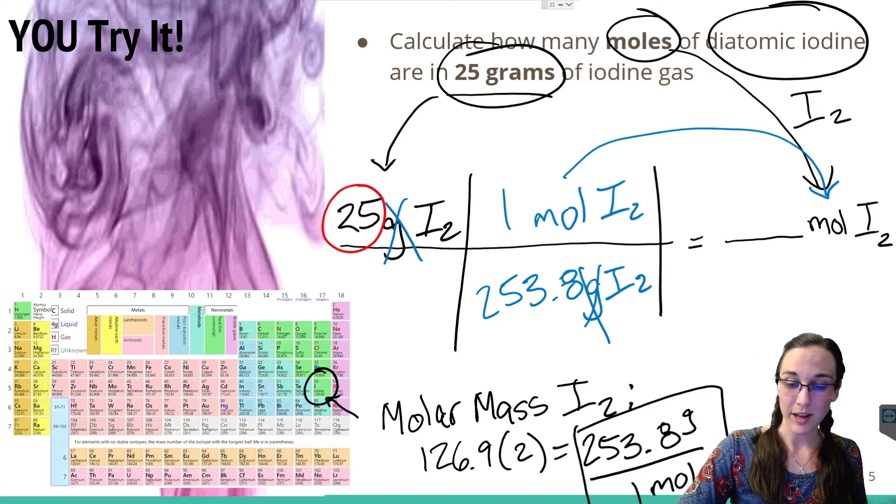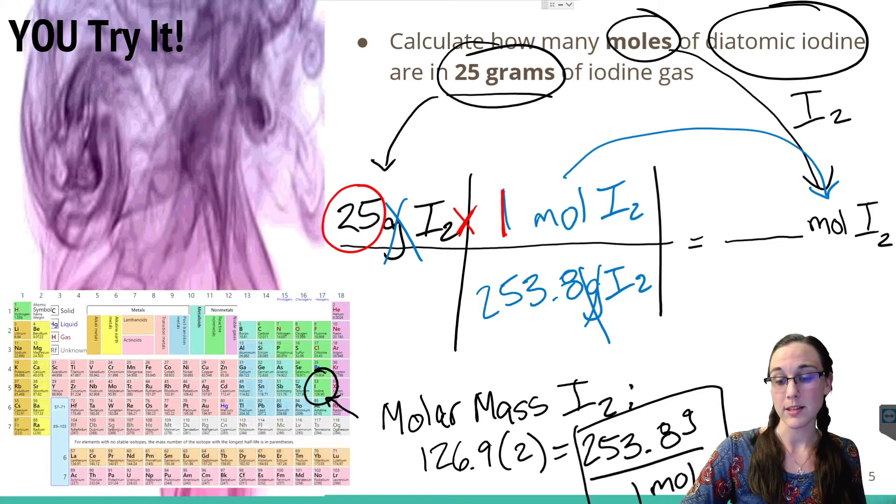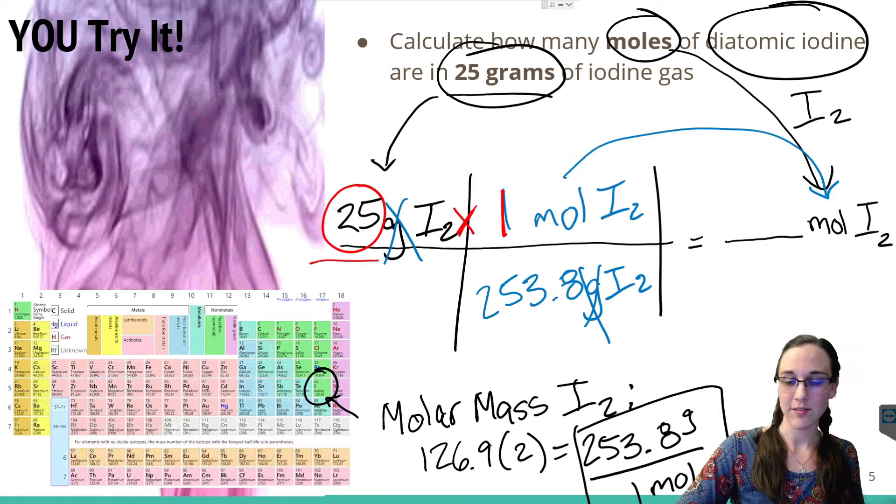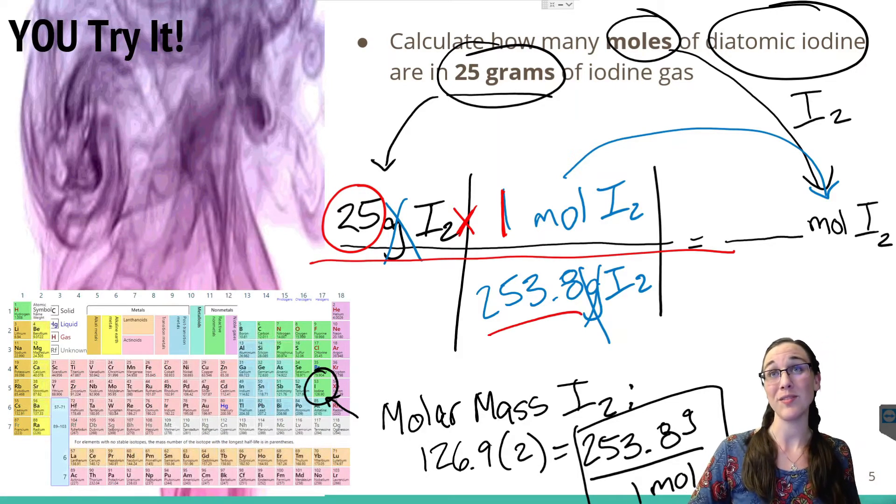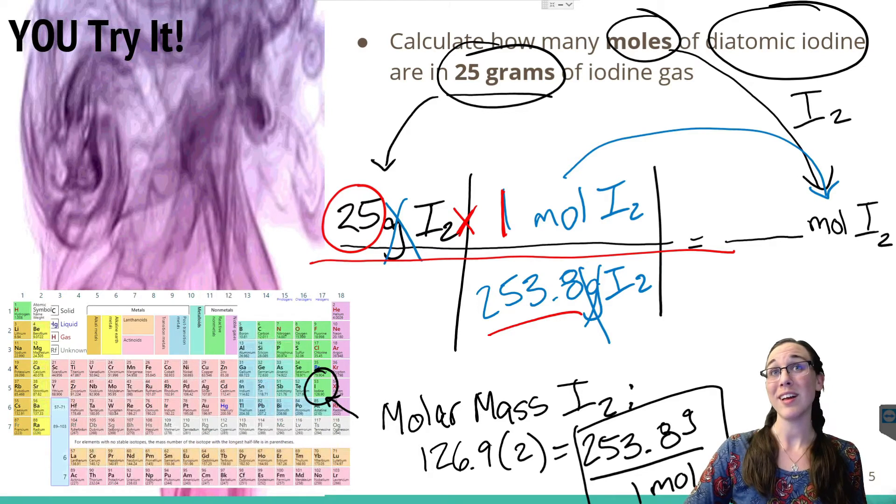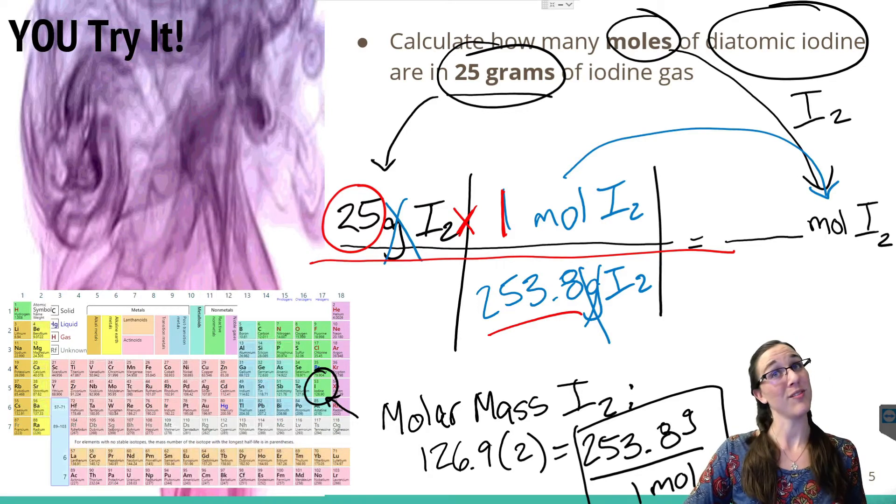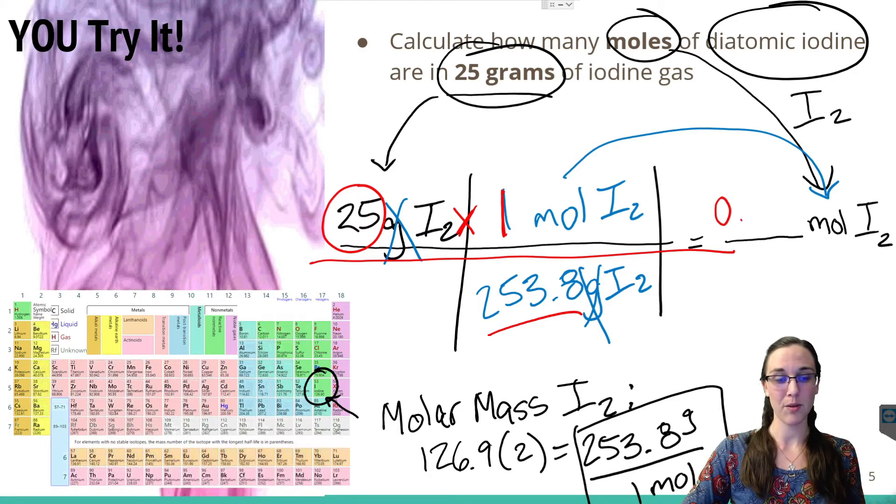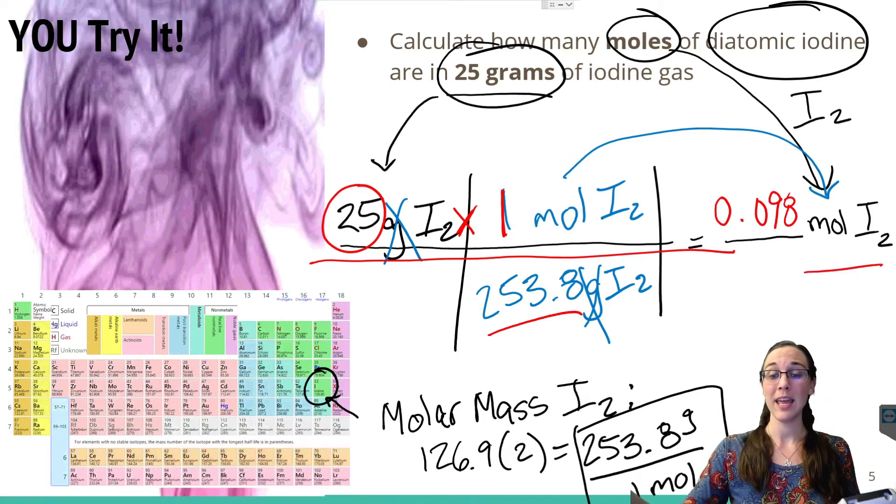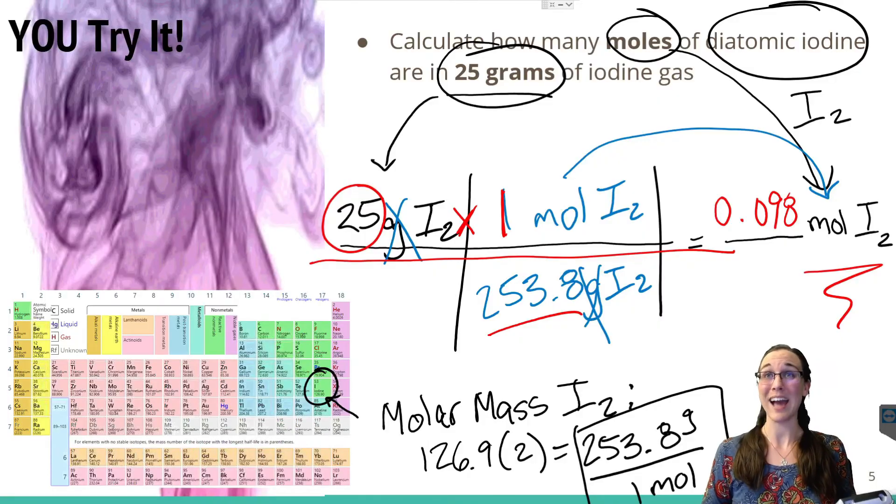So just like before, I have 25 times one because those numbers are next to each other divided by 253.8. After plugging that into my calculator, I end up with a very small value of 0.098 moles of I2 in 25 grams of I2 gas.